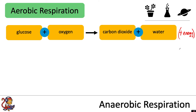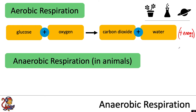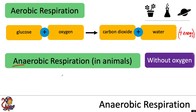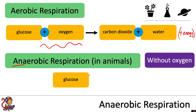However, there is a second type of respiration called anaerobic respiration. Anaerobic respiration means without oxygen, so in anaerobic respiration we lose the oxygen from the beginning of the equation. We start off with just glucose, and this time it's not reacting with oxygen, so it makes different products.